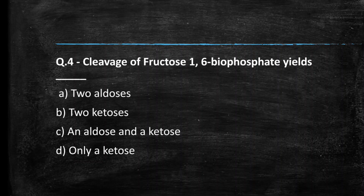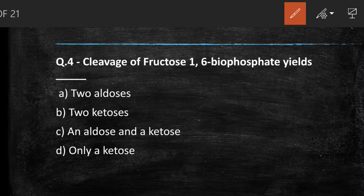Next question: the cleavage of fructose-1,6-bisphosphate yields — (A) 2 aldoses, (B) 2 ketoses, (C) an aldose and a ketose, (D) only a ketose. The right answer is option C, an aldose and a ketose — one is DHAP (the ketose) and the other is glyceraldehyde-3-phosphate (the aldose).